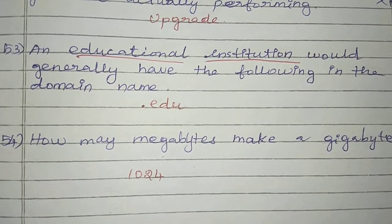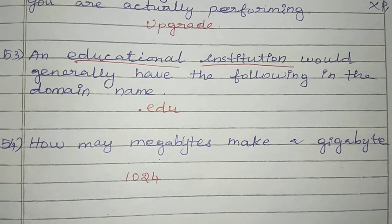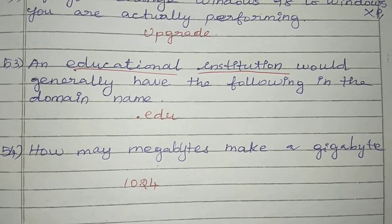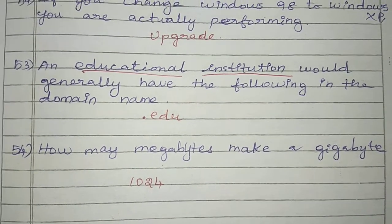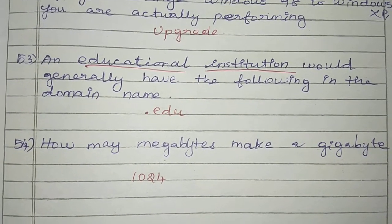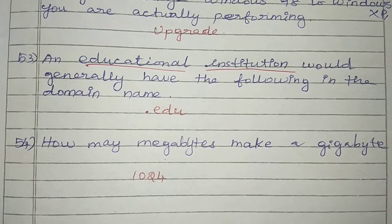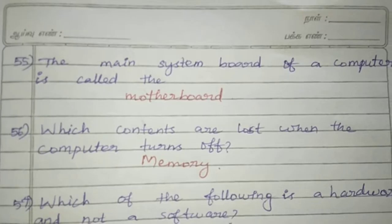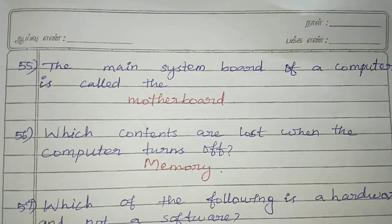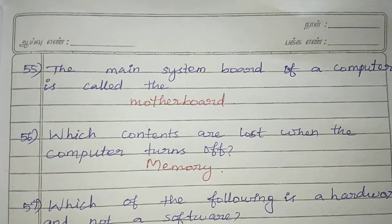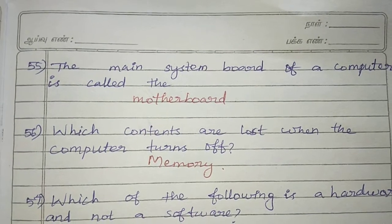Question 54: How many megabytes make a gigabyte? Answer: 1000. Not 2 or 4. Question 55: The main system board of a computer is called the Motherboard.